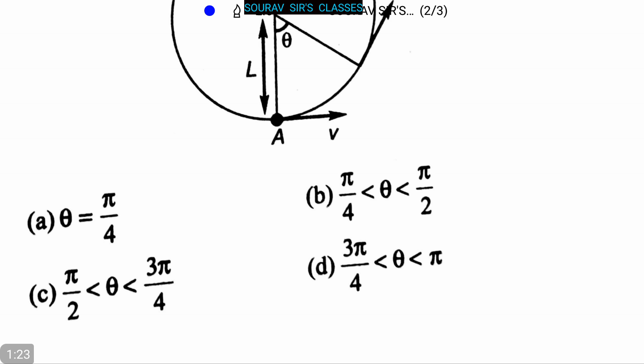So now let's proceed to the solution. Here we can write that v is equal to root over 5gl, and mark it as first equation.